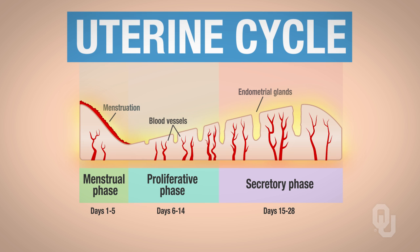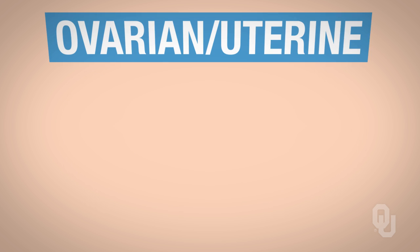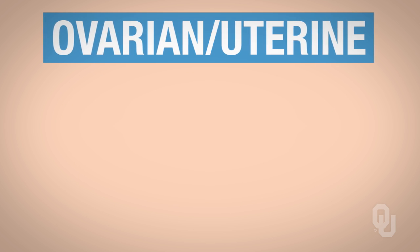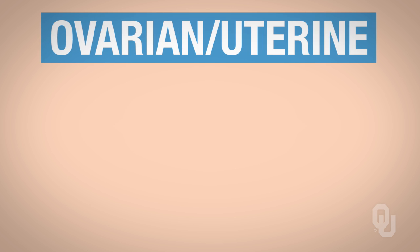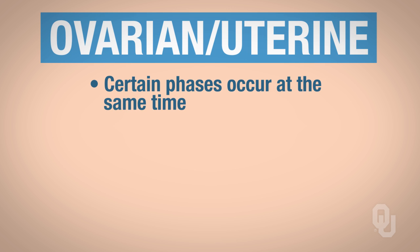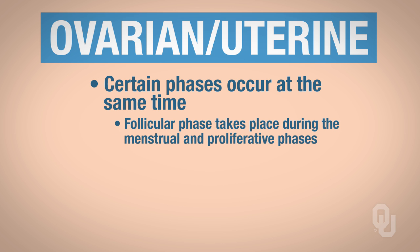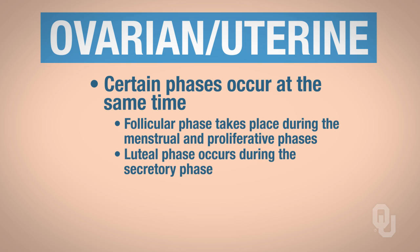This is where it gets complicated. The ovarian cycle and the uterine cycle — certain phases are occurring at the same time. The follicular phase takes place during the menstrual and the proliferative phases, and the luteal phase is occurring during the secretory phase.